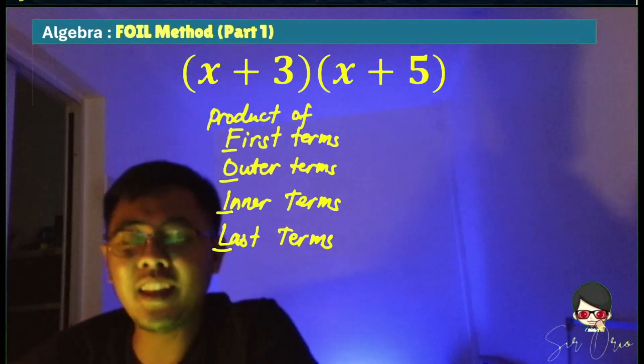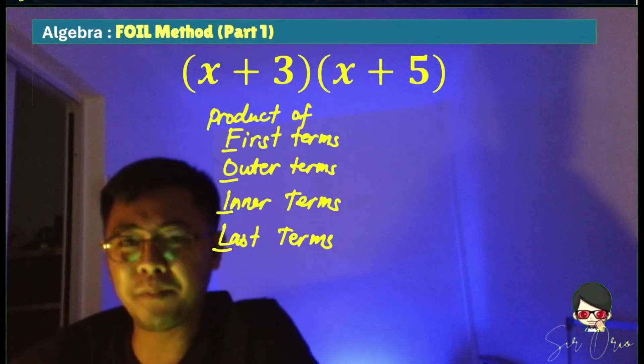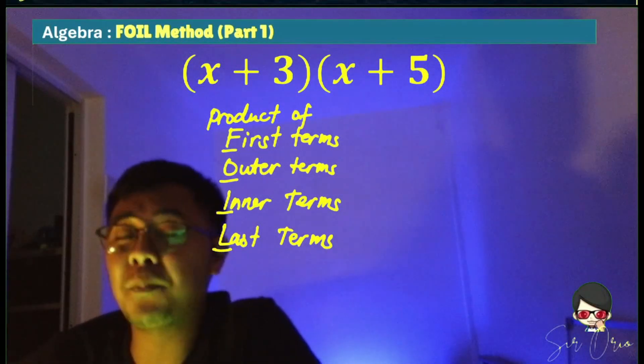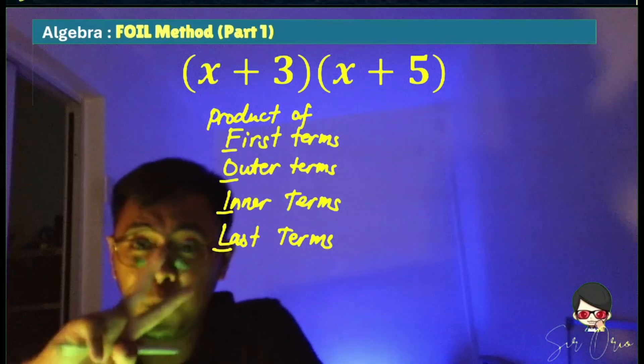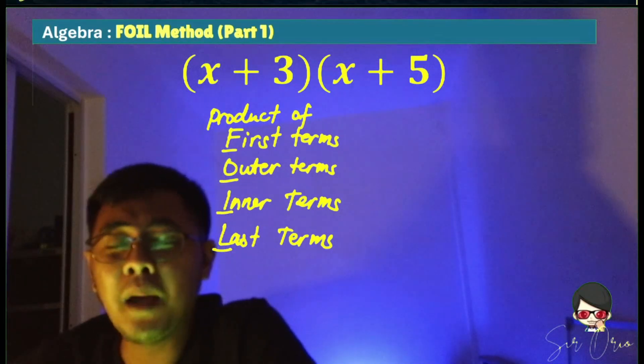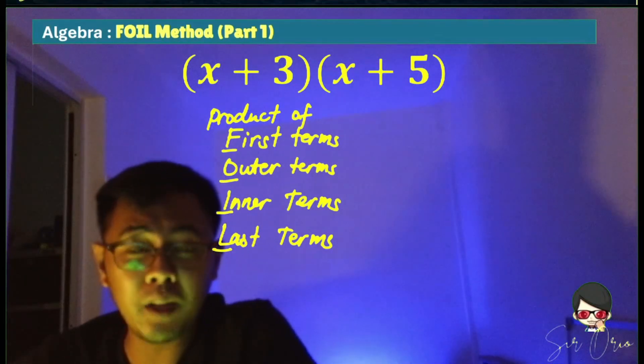Hi everyone! Let's solve this math problem. So how are we going to find the product of two binomials applying the FOIL method?